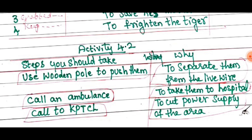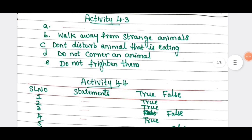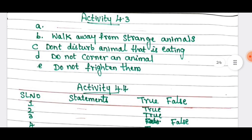Activity 4.3: What safety measures would you take to avoid animal attacks? Walk away from strange animals. Don't disturb an animal that is eating. Do not corner an animal. Do not frighten them. This is the answer for activity 4.3.